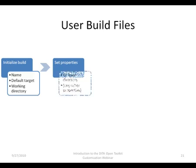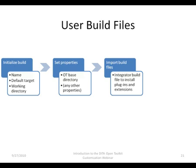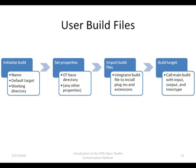Next, you define properties to be used later in the build process. The Open Toolkit base directory is such a property. You import any build files needed for your build and run the Open Toolkit integration to integrate any newly or modified plugins installed. This last step is not really required, but highly recommended. Finally, the user build file must call the main build file called build.xml, with the input file, output folder, and transformation type as arguments.